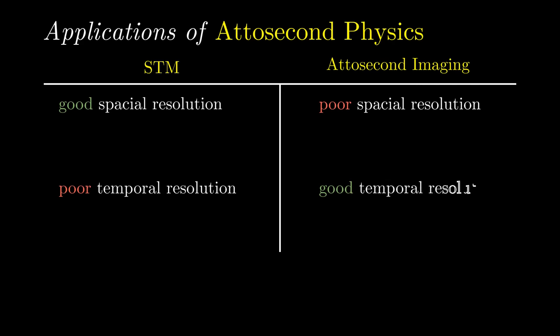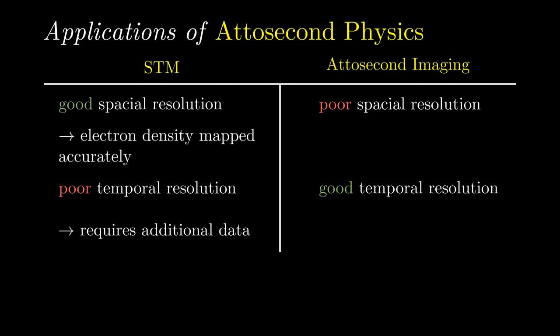This means that although electron density can be accurately mapped, the evolution of electron density over time is not directly observed, and must instead be heavily inferred using data from indirect measurements such as absorption or emission spectra.